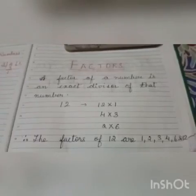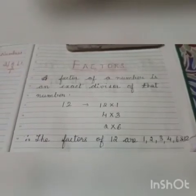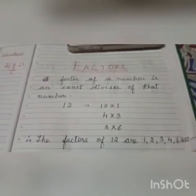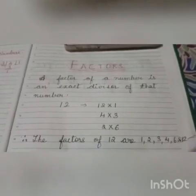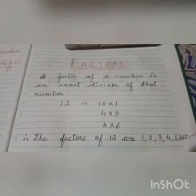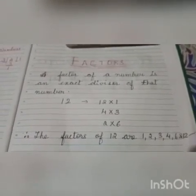That means 12 comes in its own table, that is 12 ones are 12. Then 4's table, 3's table, 2's table and 6's table.